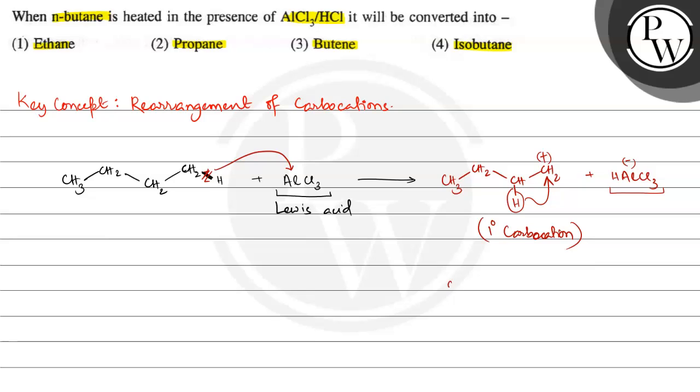So the reaction will be: CH3-CH2-CH-CH3, and here a positive charge. Alright. And again, the carbon which has the positive charge—on its adjacent carbon, a methyl group is present. Now, this is a 2-degree carbocation.